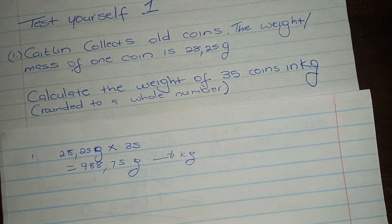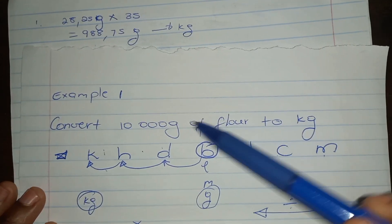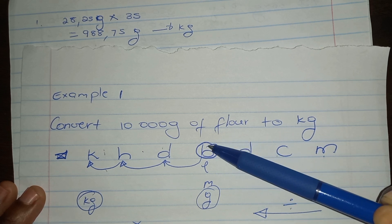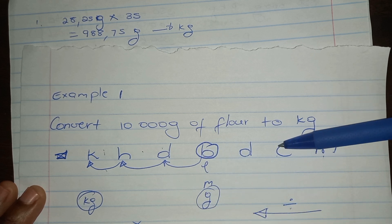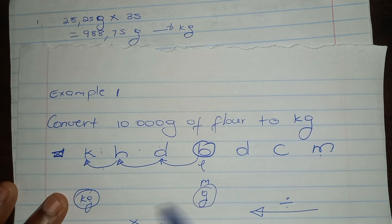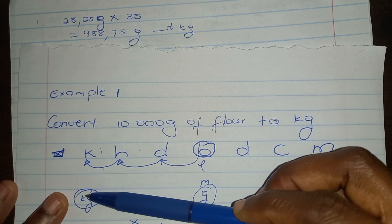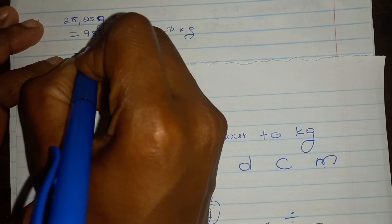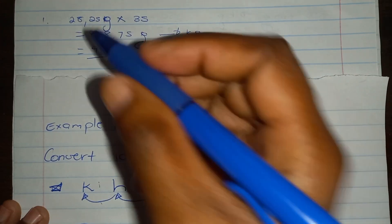Now they want the answer in kilograms, so I need to convert. I'll use the King Henry method: 'King Henry Died By Drinking Chocolate Milk' — the base units are liters, meters, grams. This gives us kilo, hecto, deca, base, deci, centi, milli. We're moving from grams to kilograms — from smaller to bigger — so we divide. My answer of 988.75 grams will be divided by one thousand.